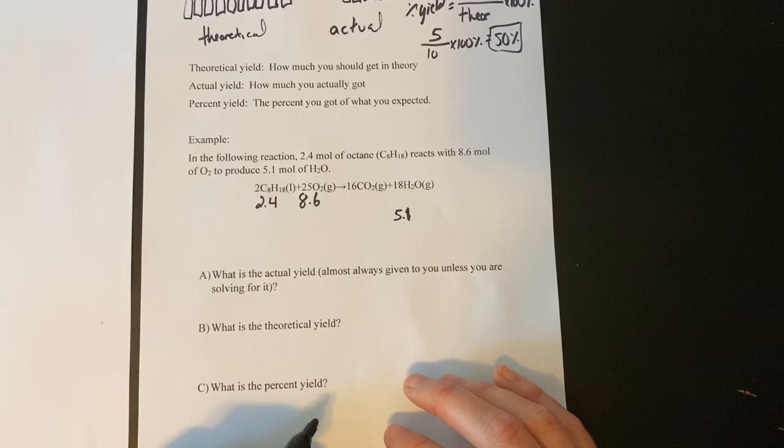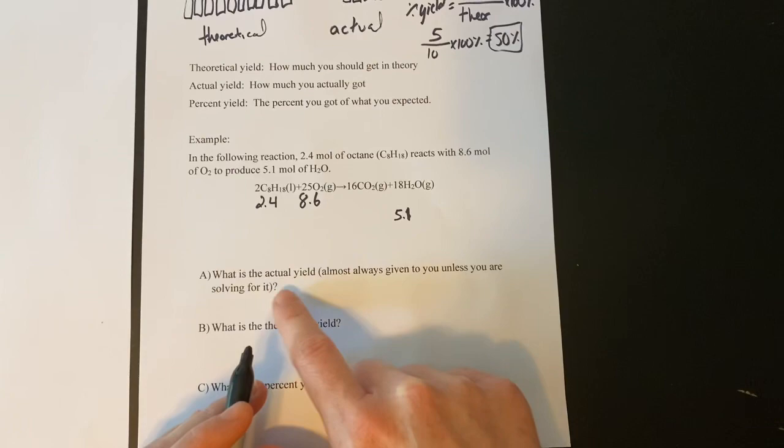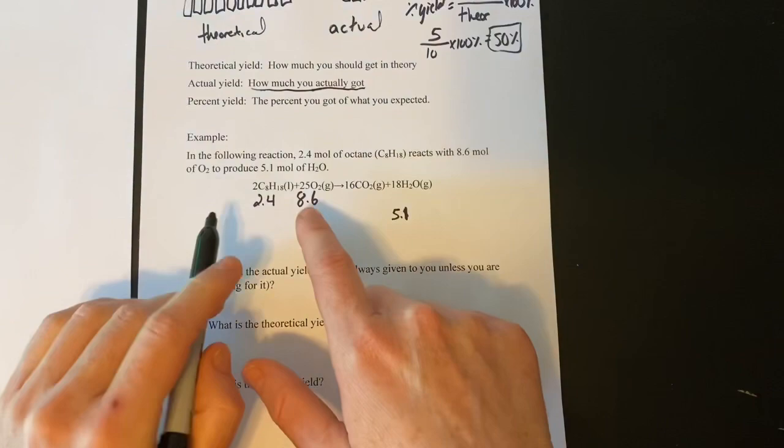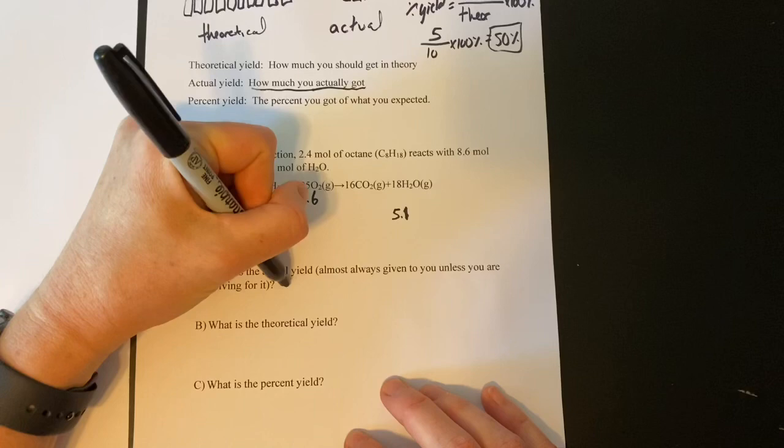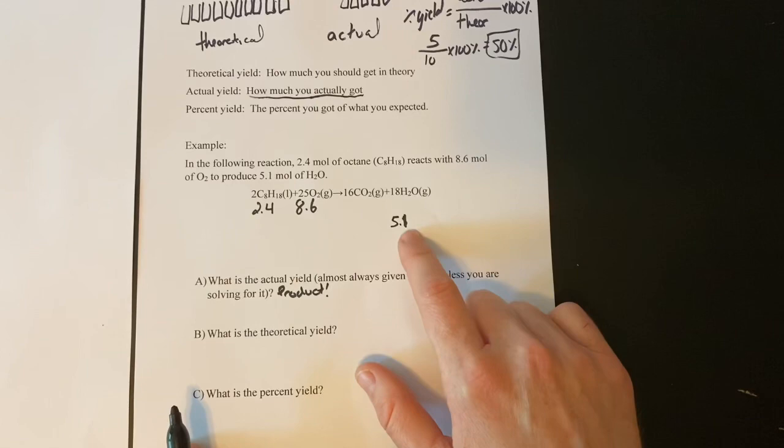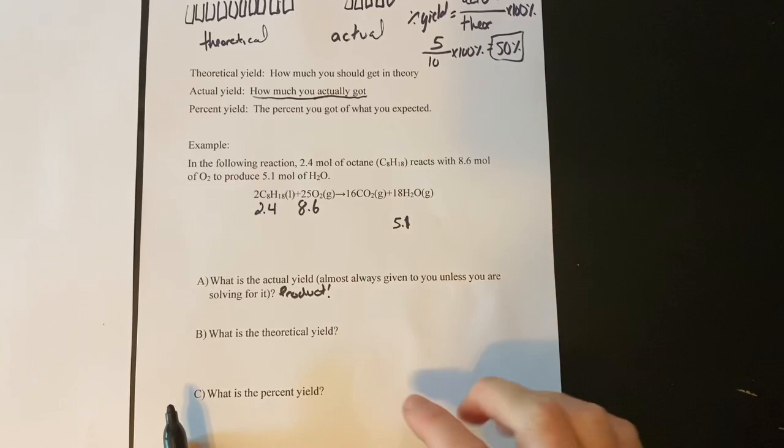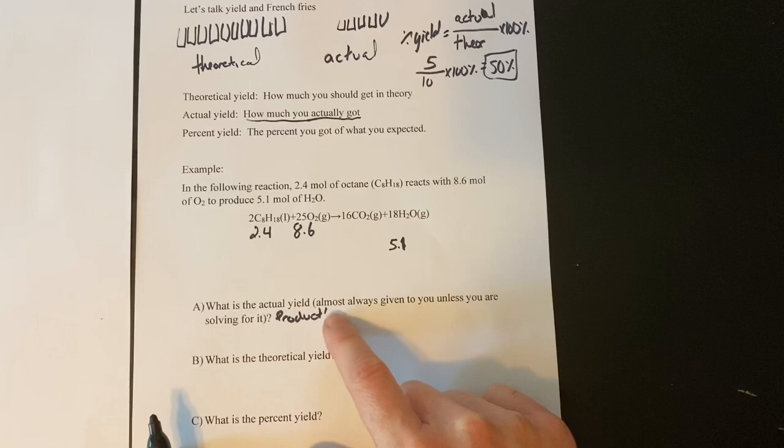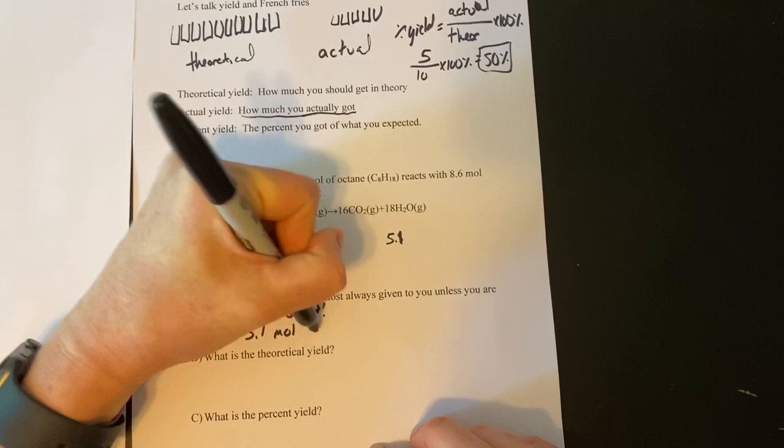It says, what was the actual yield? It didn't really specifically say which thing it's asking for, but it did give you some information in the problem. So the actual yield, again, is how much you actually got. Now, this isn't talking about what you reacted. It's saying, hey, when you've made it, how much did you actually get? It's talking about the product. Now, I could tell you how much I actually got of CO2 by taking 5.1 divided by 18 times 16, like we discussed in the last lecture. Or, I could just answer the question, what is the actual yield? Well, we actually got 5.1 mol of water.